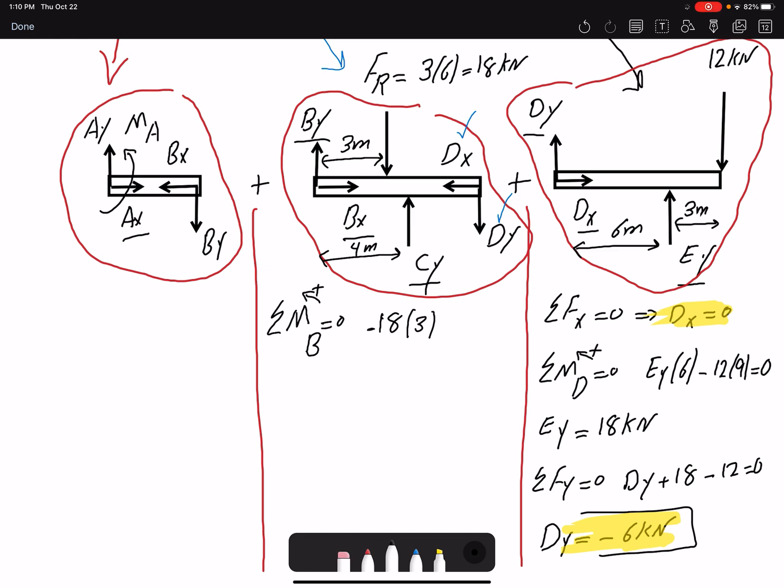Then I will have my force CY. It's creating a positive moment. Moment arm four. Then I have DY. It's creating a negative moment. A moment arm would be six. I know the value of DY would be negative. So when I'm plugging the negative value, I will get a positive at the end. But here DY would be negative six. If I plug in, the only unknown would be CY. Therefore CY would be 4.5 kN.